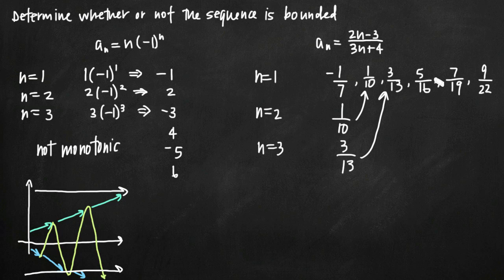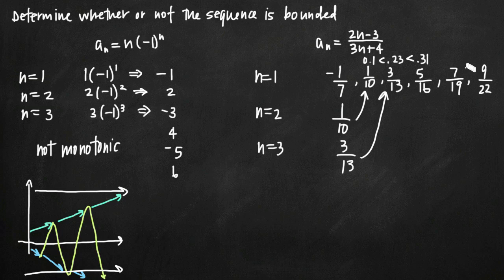Taking decimal approximations: 1 tenth equals 0.1, 3 over 13 is approximately 0.23, and 5 over 16 is approximately 0.31. The sequence is clearly increasing — each value is greater than the previous one. Because the sequence is always increasing, we can say that the sequence is monotonic.